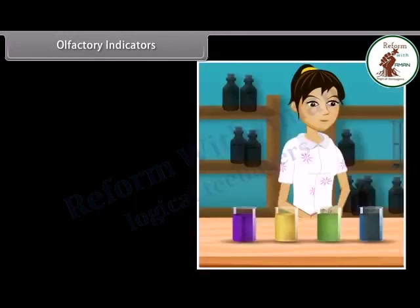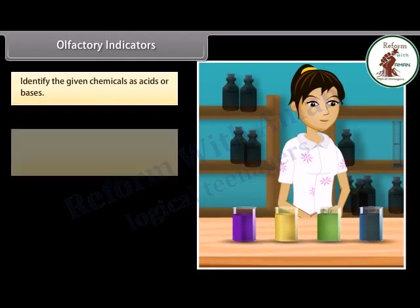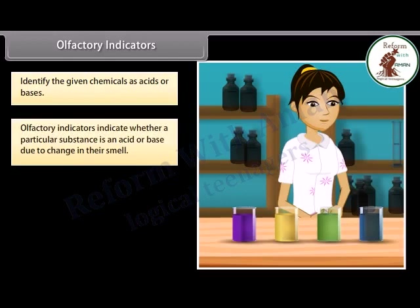Olfactory indicators: suppose you are given four chemicals and asked to identify them as acids or bases — how will you do it? We have olfactory indicators, which indicate whether a particular substance is an acid or base due to change in their smell. They are used in the laboratory to test whether a solution is a base or an acid by a process called olfactory titration.